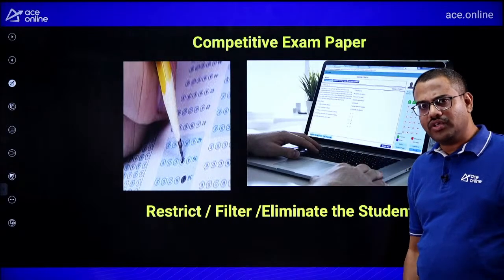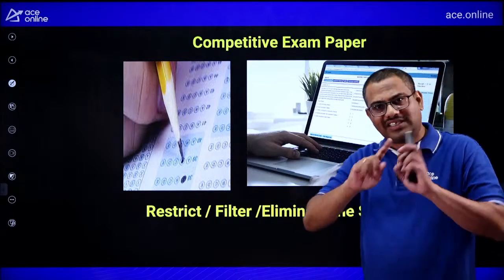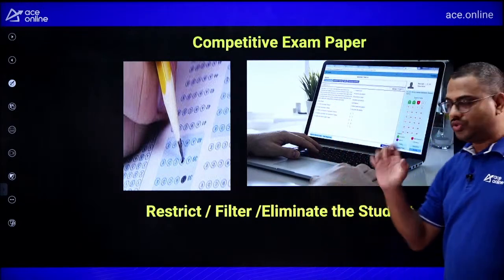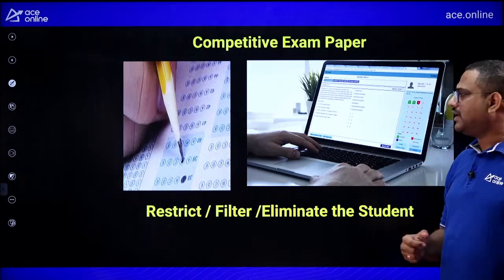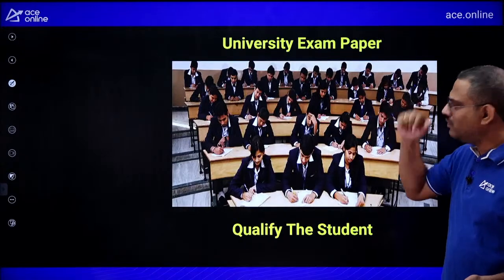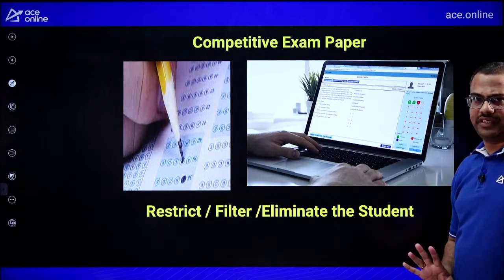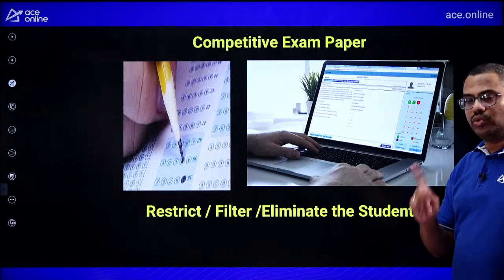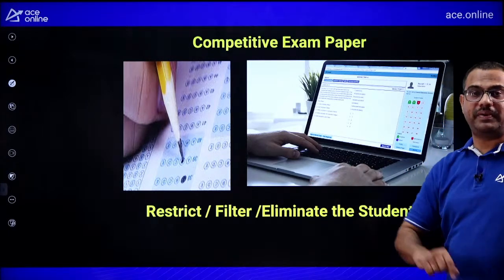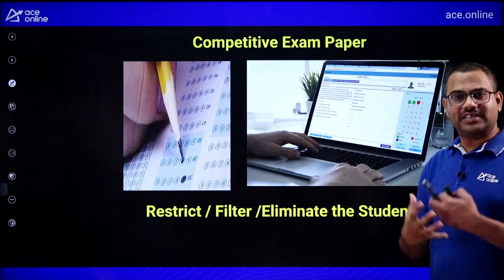Even students who scored 80–90% in university exams often fail to qualify in GATE or ESE. The reason is preparation style and strategy — what to read, what not to read, relevancy. In 6 to 8 months, reading full textbooks is not feasible. ACE Engineering Academy material is optimized for competitive exam preparation — the team identifies what style of bits come, which areas to focus on, and what is relevant for the exam. That is the key difference.